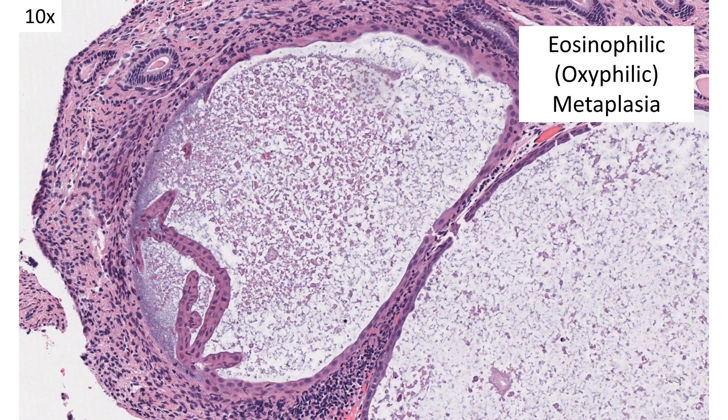This is an example of eosinophilic — sometimes called oxyphilic — metaplasia. You can see it here lining this big glandular space. The cells gain more eosinophilic cytoplasm, and sometimes the nuclei look hyperchromatic, or you may be able to see prominent nucleoli, as you can see towards the top of this gland here.